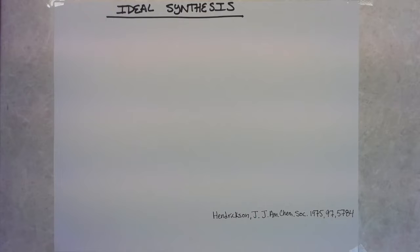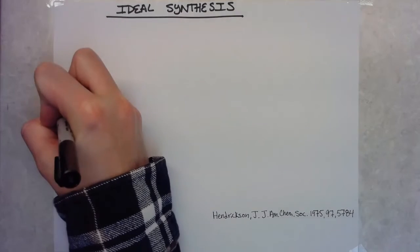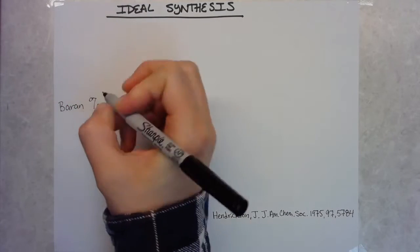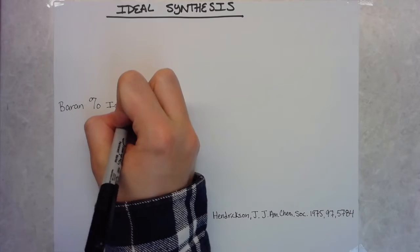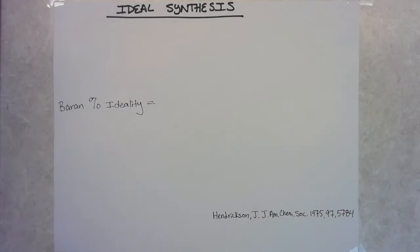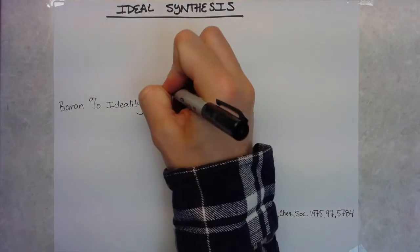The goal of any total synthesis project would be if you can start with the simplest material you can buy at the cheapest cost possible and then go straight from that very simple product to a very complex, most likely chiral, optically active natural product without the need to functionalize anywhere to protect or deprotect and just completely build the complexity every step of the way.